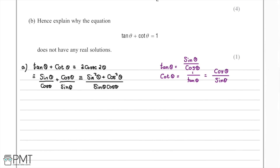Now we think about what we know about these terms. The first thing that springs to mind is sin squared theta plus cos squared theta. We know the trig identity that sin squared theta plus cos squared theta equals 1. This simplifies our numerator greatly, and since it moves us in the right direction, we substitute 1 into our equation.